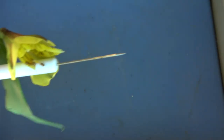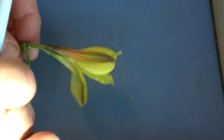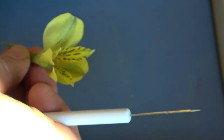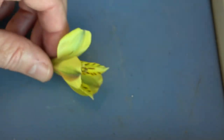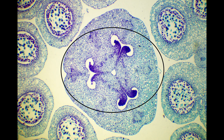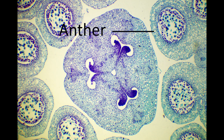Dissecting the flower provides a closer look at the number of petals, sepals, anthers, and pistil. Here's a look at a microscopic cross section of a lily flower bud, where you can clearly see the three-lobed stigma, and surrounding the stigma are six anthers. Microsporocytes are visible in the anthers — these are the cells that will develop into pollen.